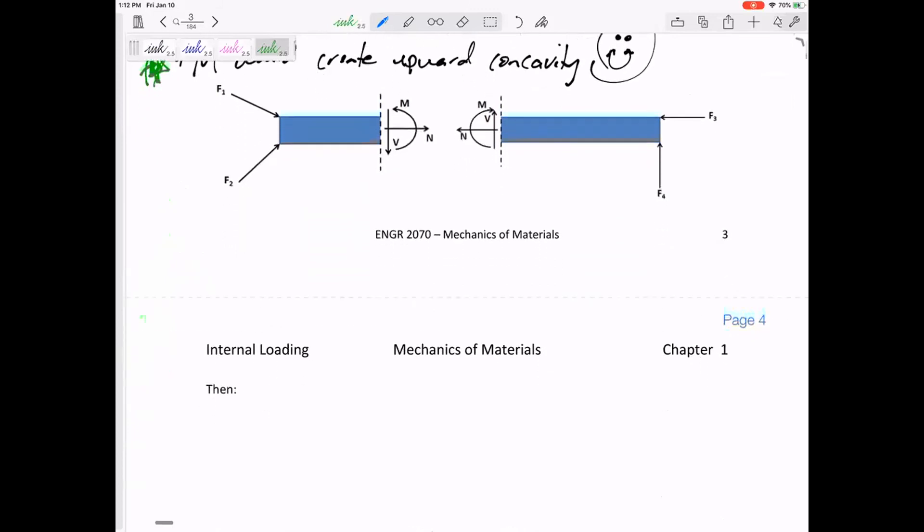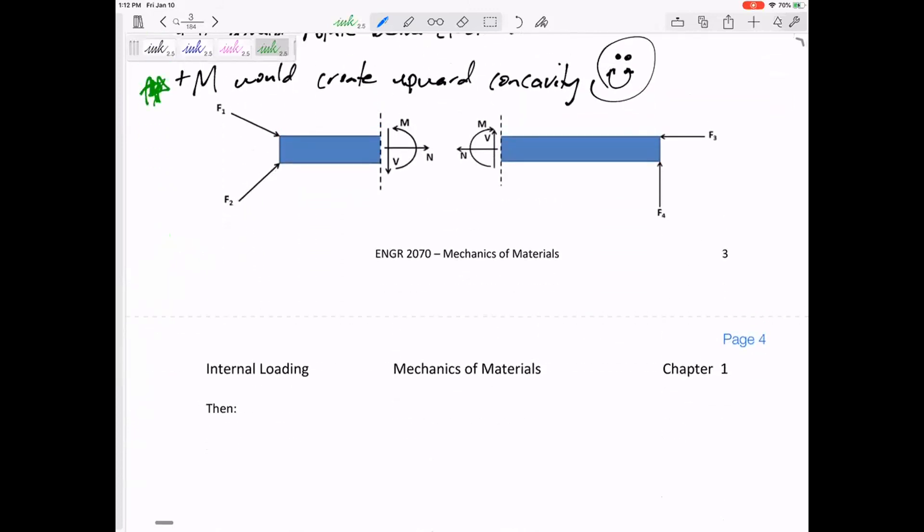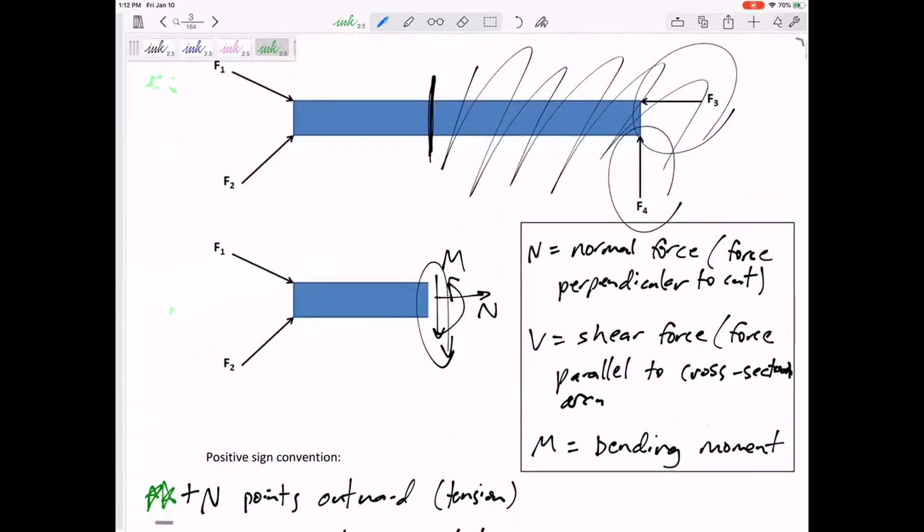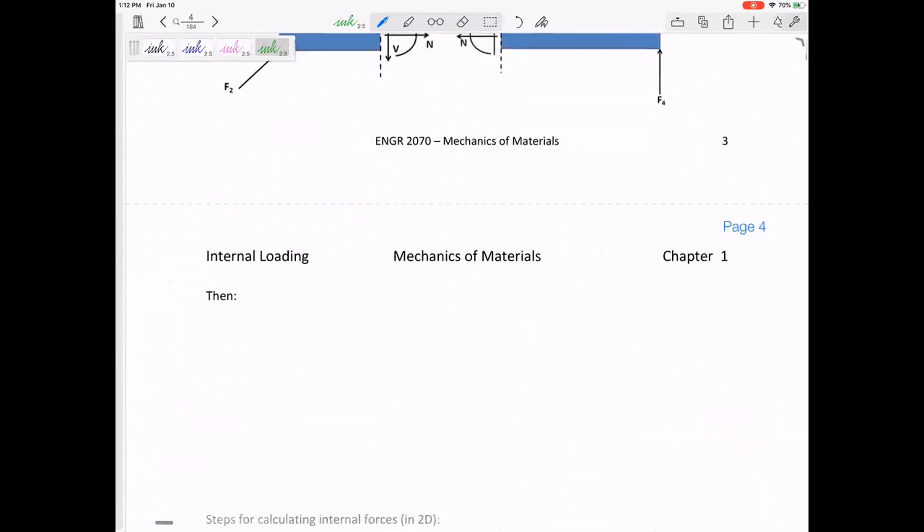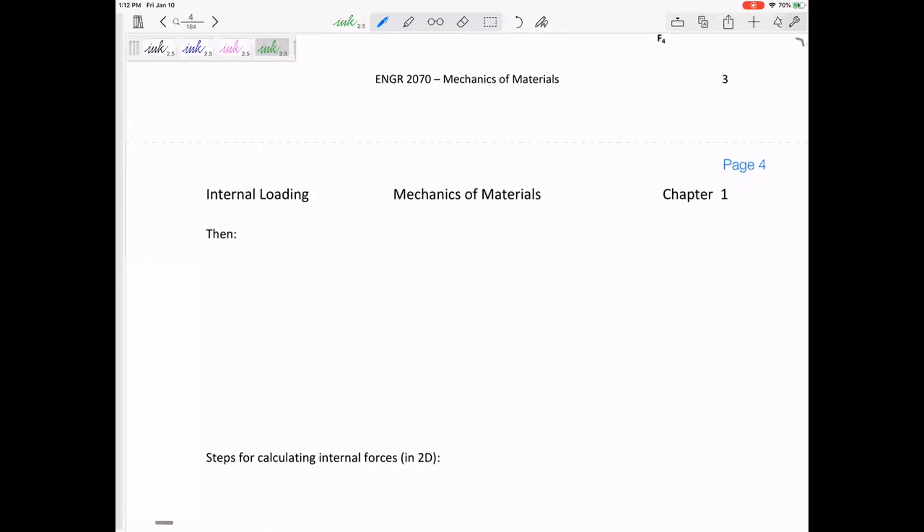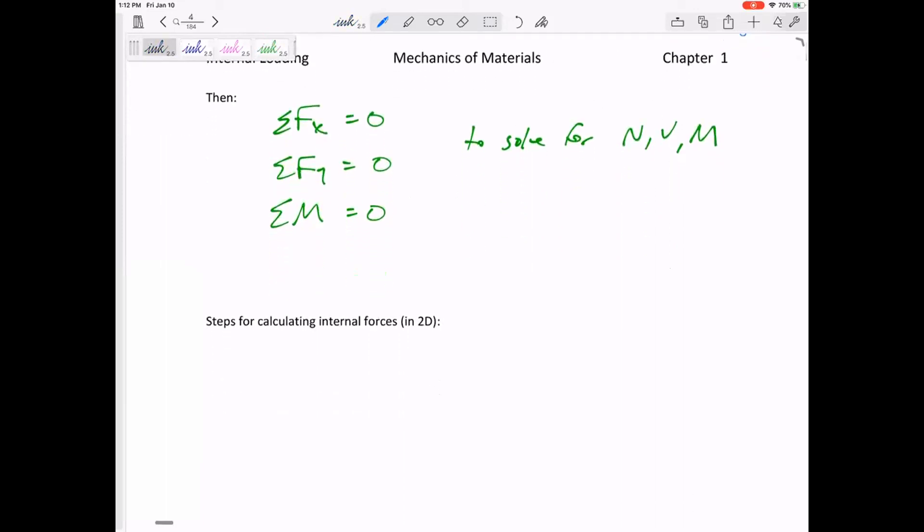So what do we do? We cut it, draw N, V, and M in the positive sign convention. Then sum of forces in X equals zero, sum of forces in Y equals zero, sum of moments equals zero, to solve for N, V, and M. We use our equilibrium equations to solve for N, V, and M. This is statics—a review, hopefully.